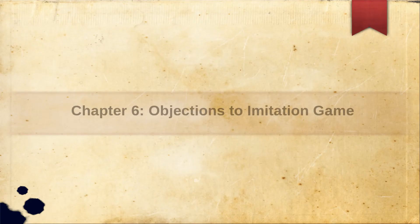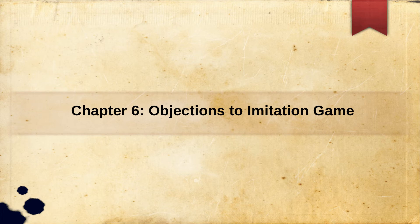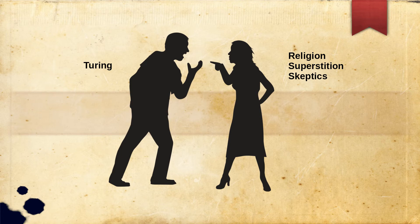Chapter 6: The Haters. In this section, he explores a variety of objections people come up with to distinguish a thinking computer from a human mind. This part was the most entertaining to read because it's basically a scientist arguing with religion, superstition, and skeptics. Let's explore some of the objections.